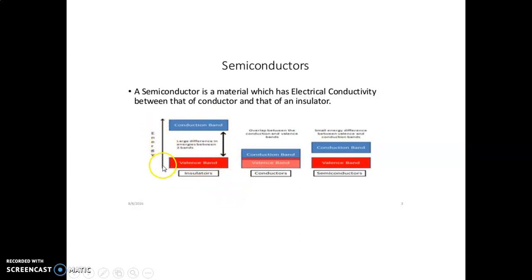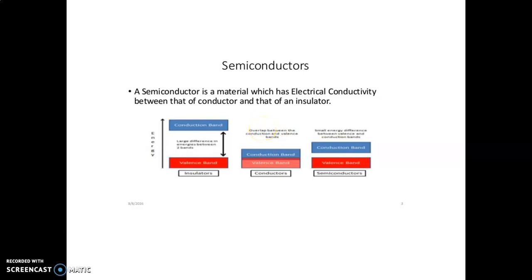The energy level flows from the valence band to the conduction band. In the insulator, the energy level is very high because of the large gap between the two bands. In conductors, there is no energy gap because both bands are overlapping — there is no gap between the conduction band and valence band. In a semiconductor, a small energy difference between the valence and conduction band exists.